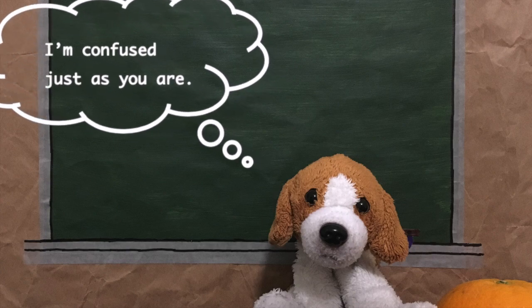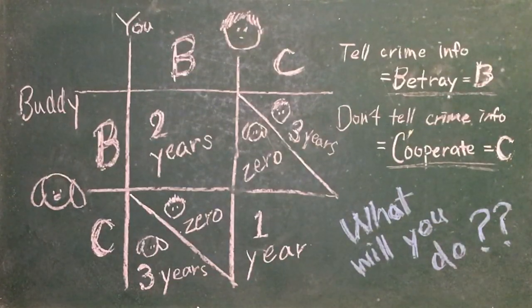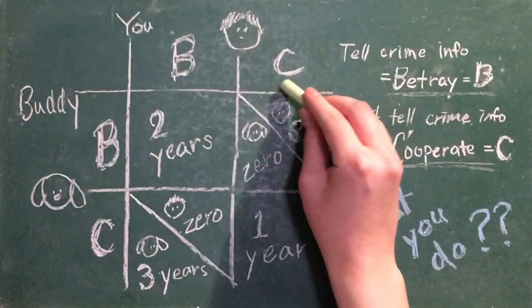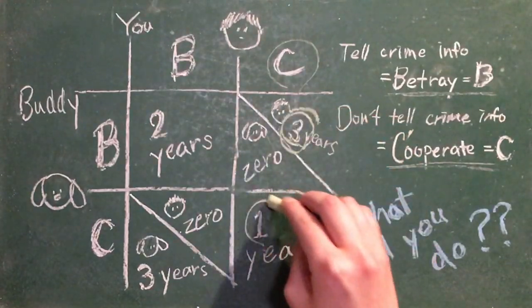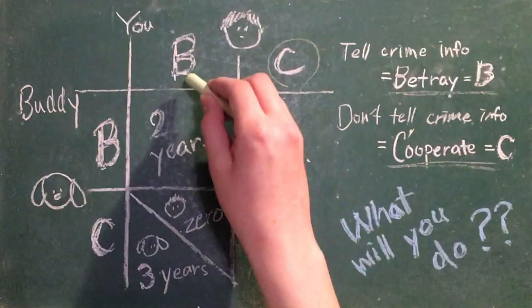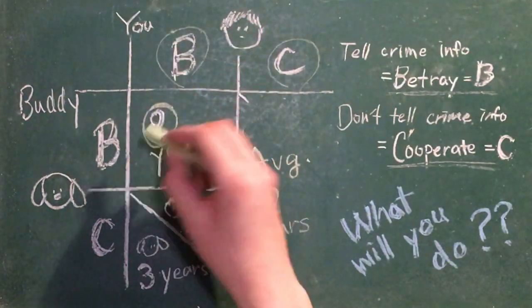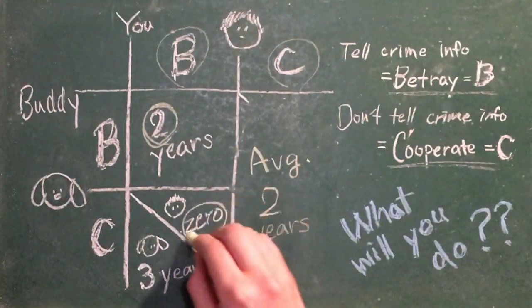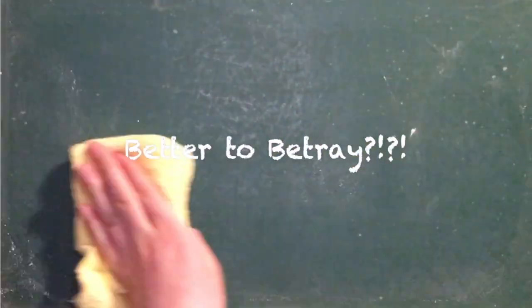What does this all mean? So here's the table with all the information: B for betraying and C for cooperating. If you look at your icon at the top and choose to cooperate, then your sentence will either be three years or one year, so an average of two years. If you decide to betray, then your sentence would either be two years or zero, an average of one year. So it seems like it's better to betray.